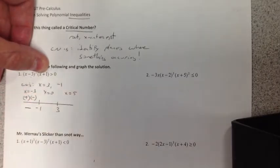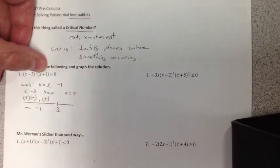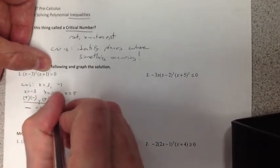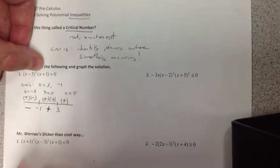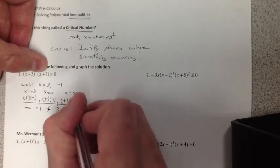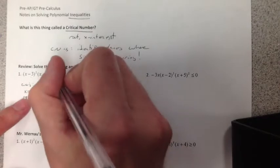And you would pick some values in between. Like if I give a number less than negative 1, like x is negative 3, between something like x equals 0, and to the right of 3, like 5. And you would plug those in. Negative 3 minus 3 squared is positive. Negative 3 plus 1 is negative. So this was a negative value.